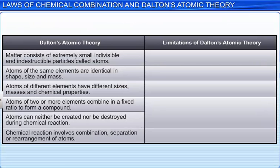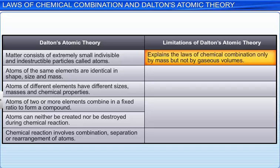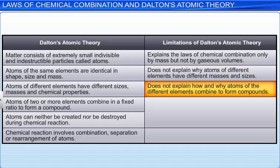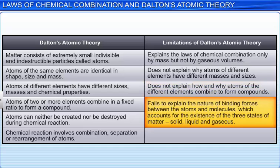The drawbacks of Dalton's atomic theory are: It could explain the laws of chemical combination only by mass, but not by gaseous volumes. It could not explain why atoms of different elements have different masses and sizes. It could not explain how and why atoms of different elements combine to form compounds. It failed to explain the nature of binding forces between the atoms and molecules, which accounts for the existence of the three states of matter.